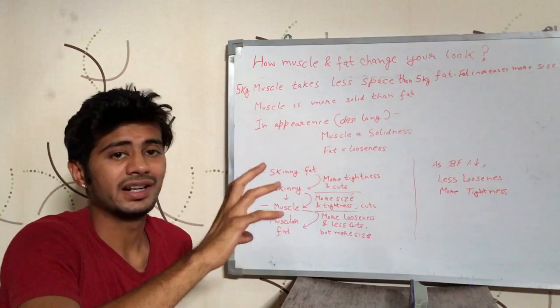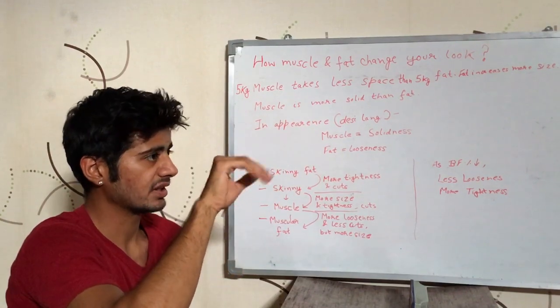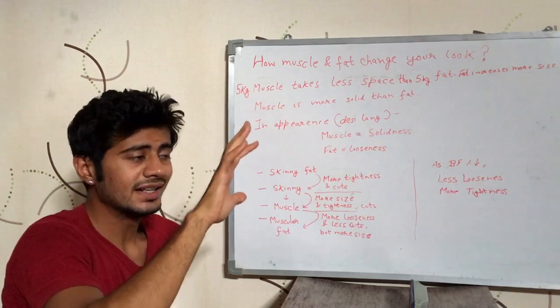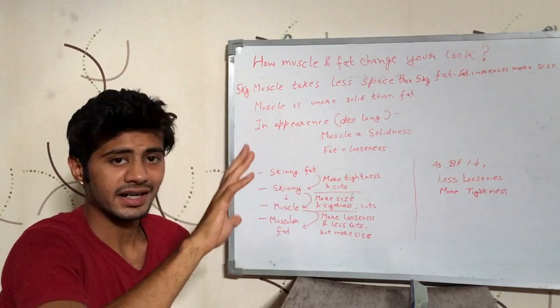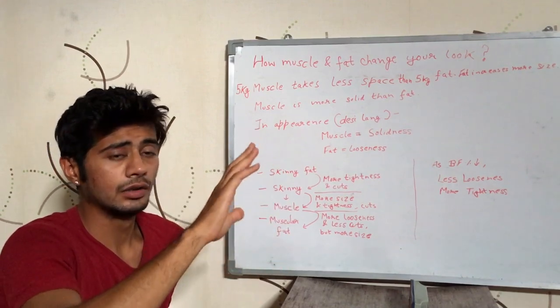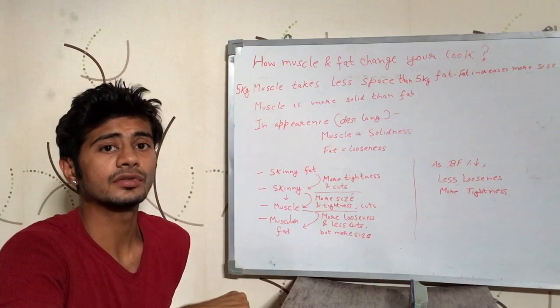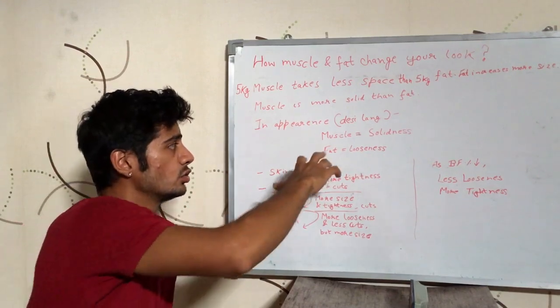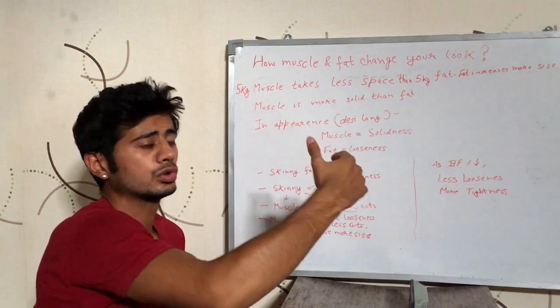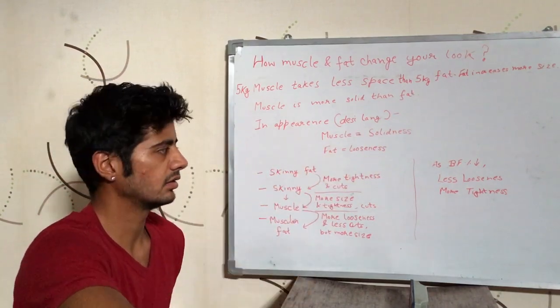Now muscle is more solid than fat. So let's take example of a person. The solidness that you feel, the tightness that you feel in the appearance of that person is because of muscle. And the looseness that you feel in the appearance of that person is because of fat. So more muscle would lead to more solidness and more fat would lead to more looseness in the appearance.